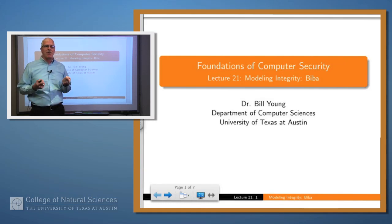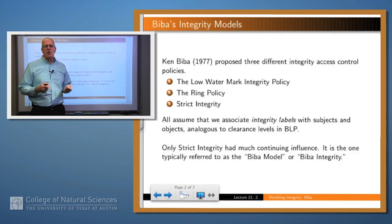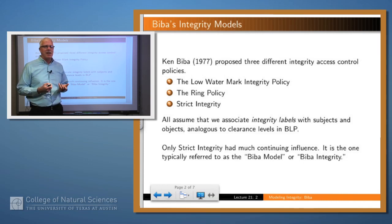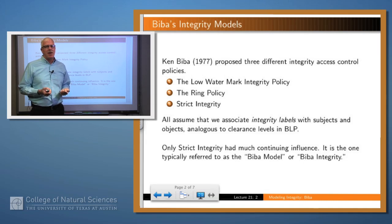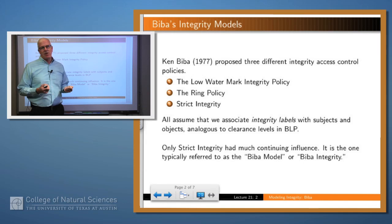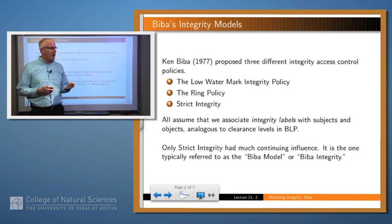Today we're going to talk about several real policies. These are due to a guy named Ken Biba, who devised them in 1977. He had three policies: the low watermark integrity policy, the ring policy, and what was called strict integrity. Only one of these has really turned out to be very influential historically, and that's the strict integrity policy. For that reason, it's also sometimes called the Biba model or Biba integrity. We're going to talk about strict integrity in this lecture and the other two policies in the next lecture.